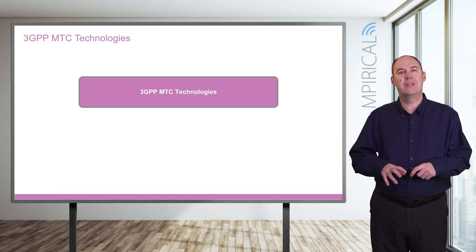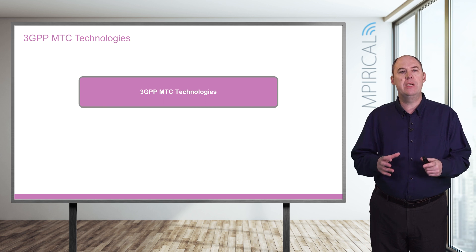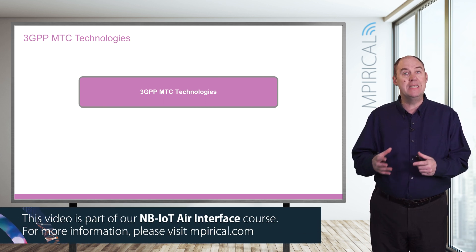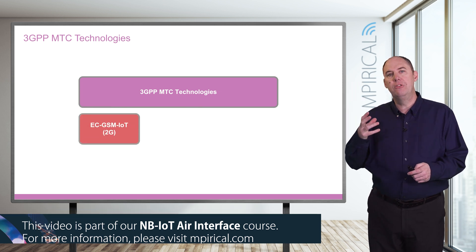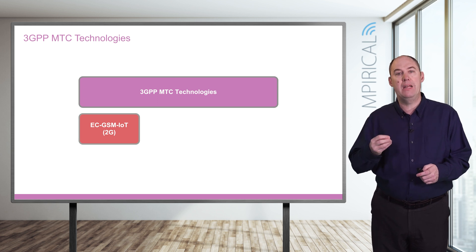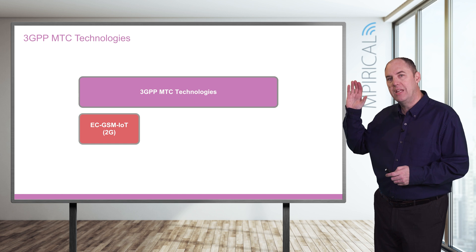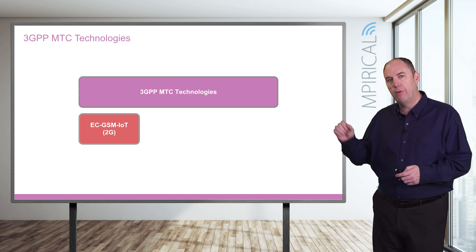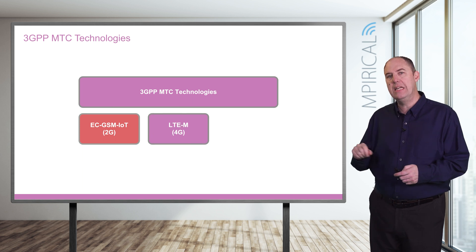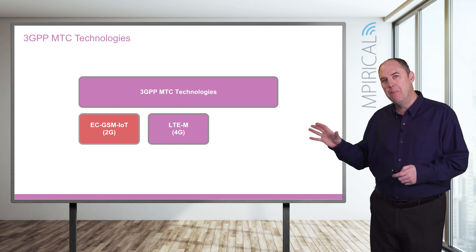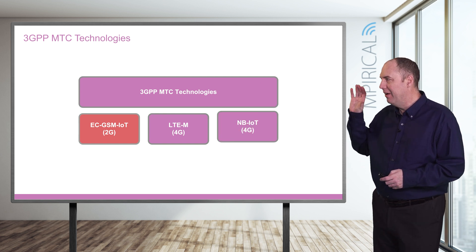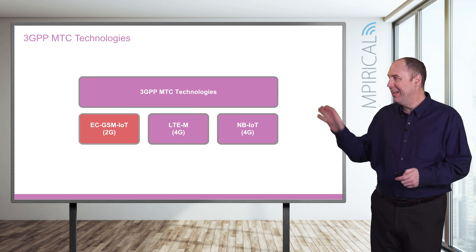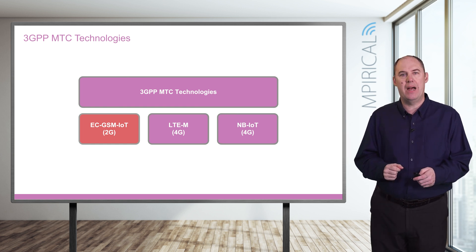In terms of the technologies, 3GPP defined various machine type communication (MTC) based technologies. In Release 13 they introduced three flavors: one specifically focused at 2G — that was the Enhanced Coverage GSM IoT — and then for LTE we had LTE-M, enhanced machine type communications, and also Narrowband IoT. What we're going to be focusing on is this latter one, Narrowband IoT, specifically delving into the air interface aspects.